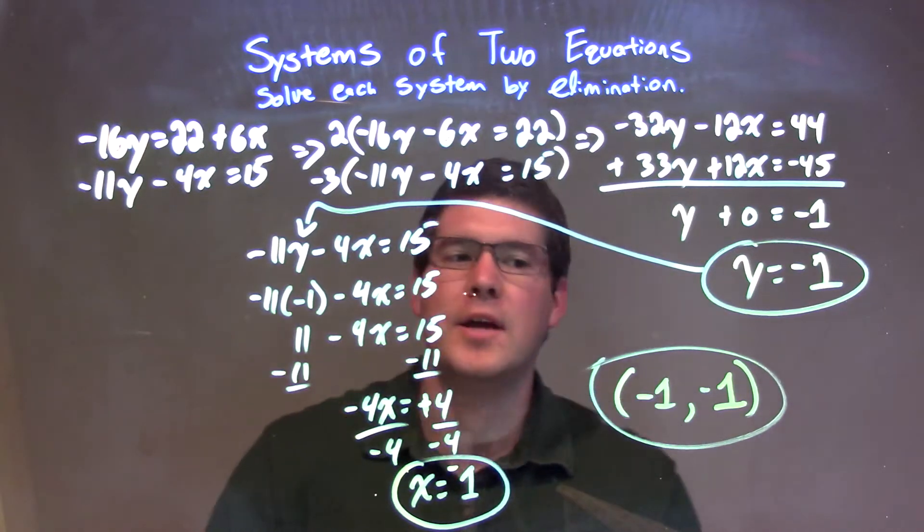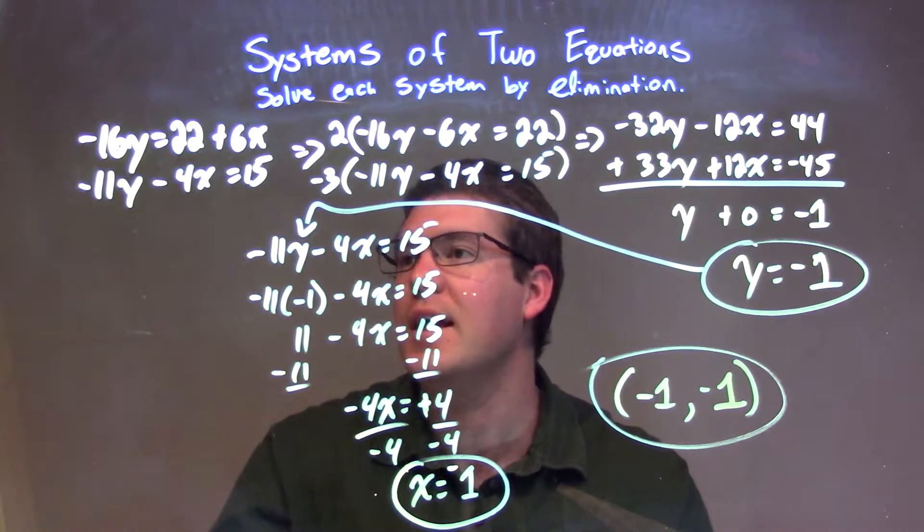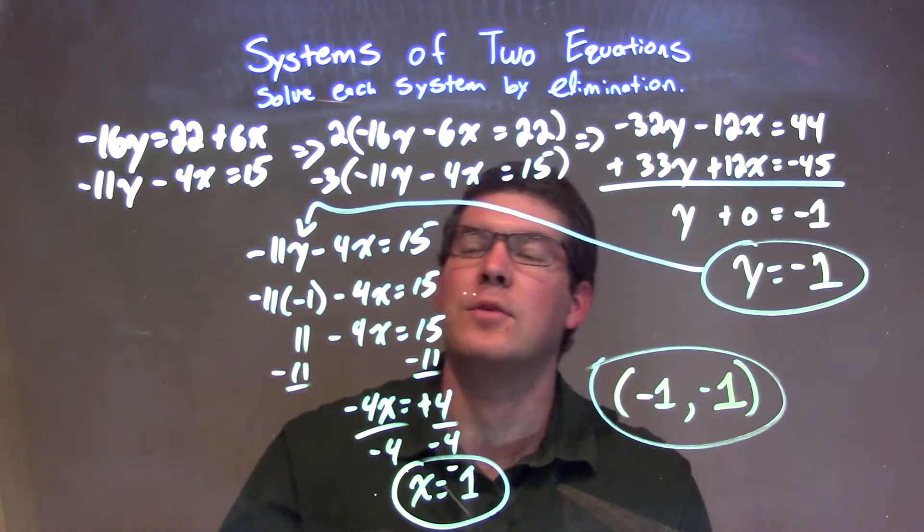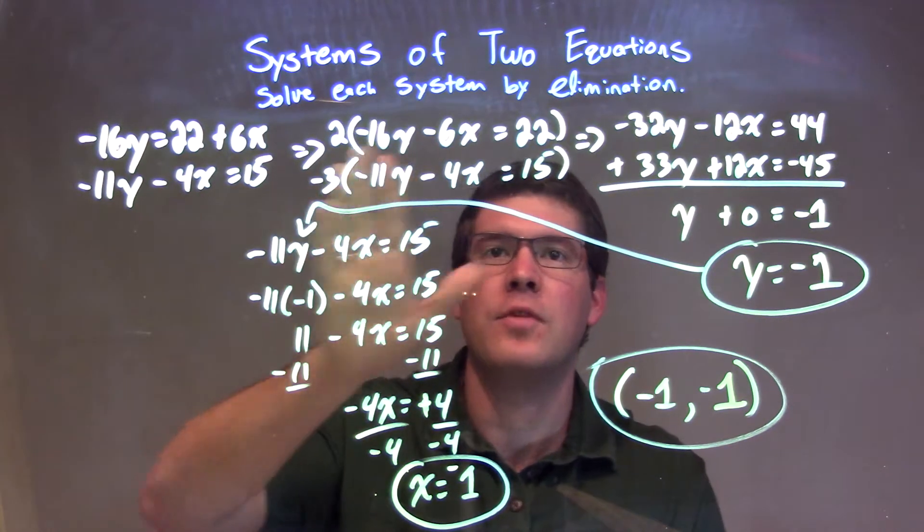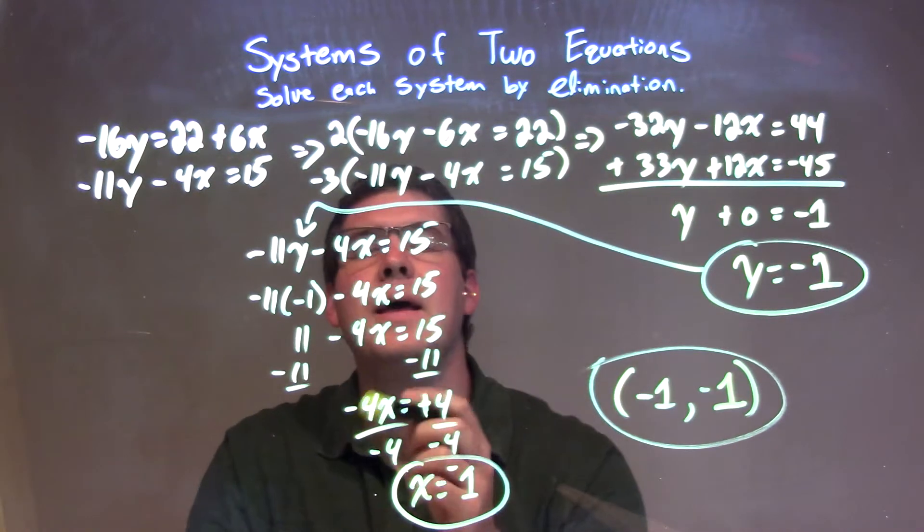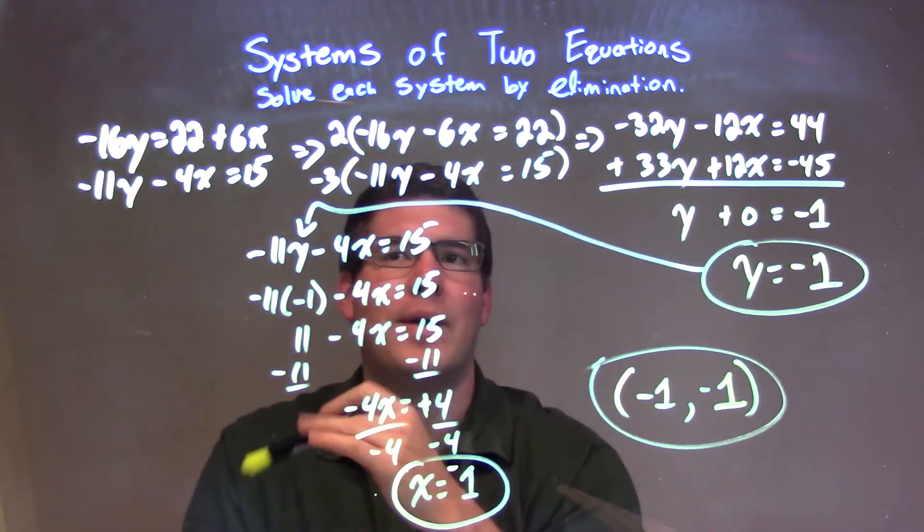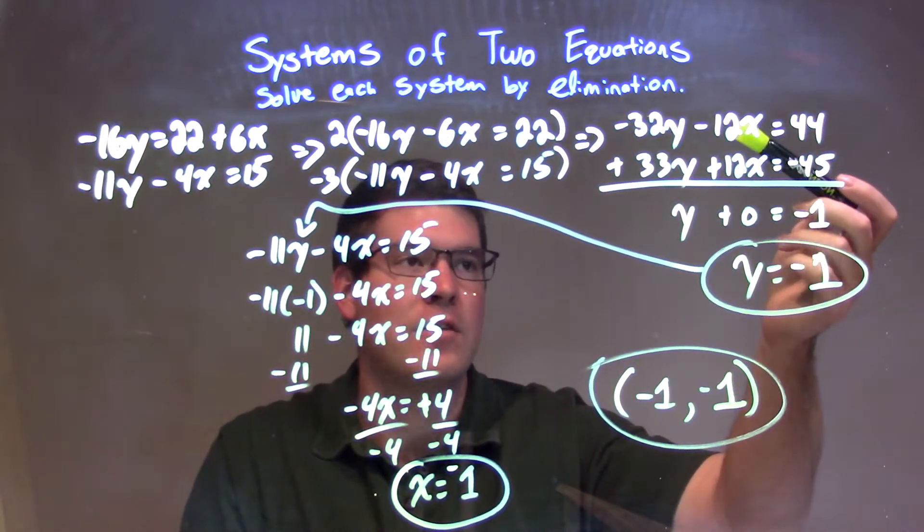So let's recap. We're given our two equations right here: negative 16y equals 22 plus 6x and negative 11y minus 4x equals 15. I rearranged it first to have my variables, then my number. So I subtracted the 6x from both sides on the first equation. Then I multiplied the top equation by 2 and the bottom by negative 3. That allowed me to eliminate, eventually, the x variable.